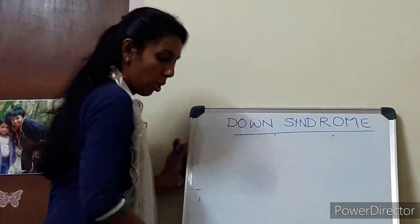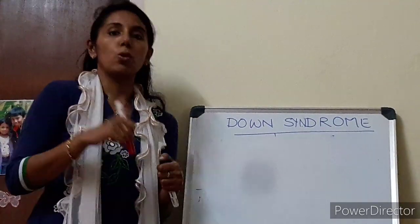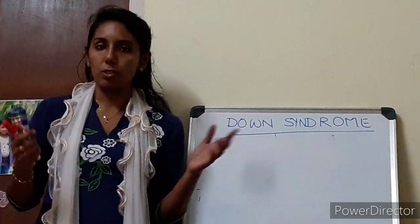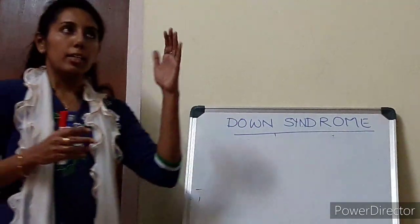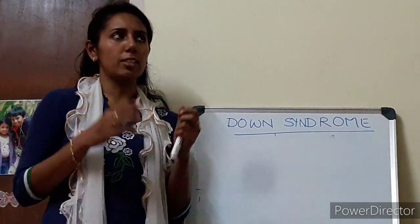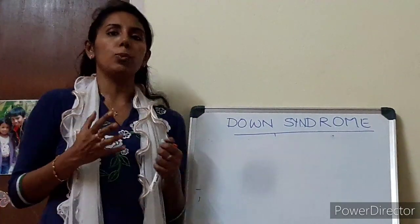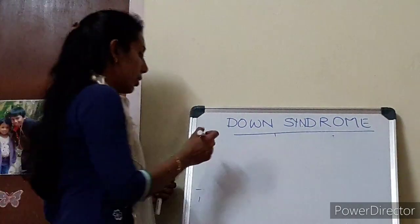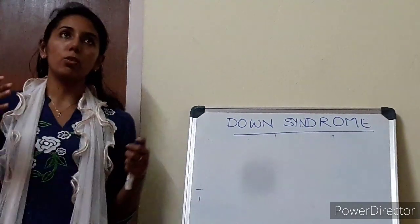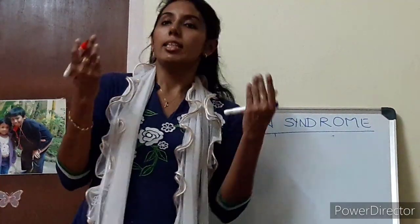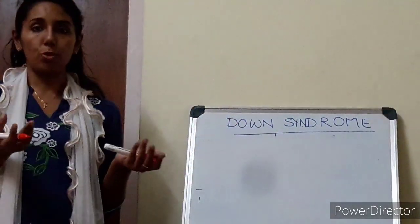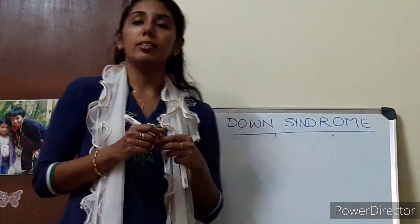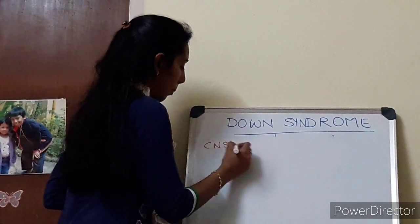Coming to the clinical features of Down syndrome, my advice to all my students and colleagues is: whenever you are studying about any syndrome or any clinical condition, remember things in an order so that you will not miss out on anything. Imagine seeing a child with Down syndrome and learn in an orderly way. First, when you are actually seeing a case of Down syndrome, the child may be hypotonic, hypotonia may be present, there may be a poor Moro reflex, and developmental delay can happen later.